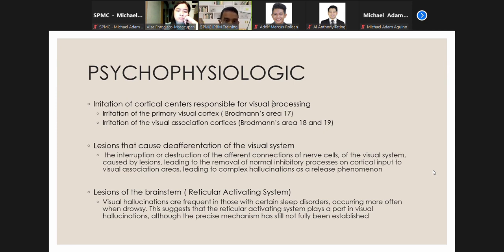Lesions that cause deafferentation of the visual system can also be one of the possible causes. The interruption or destruction of the afferent connections of nerve cells of the visual system caused by lesions leads to the removal of normal inhibitory processes and aberrant input to visualization areas, leading to complex hallucinations as a release phenomenon. Another mechanism involves lesions of the brainstem or reticular activating system. Visual hallucinations are frequent in those with certain sleep disorders, occurring more often when drowsy. This suggests that the reticular activating system plays a part in visual hallucinations, although the precise mechanism has still not been fully established.